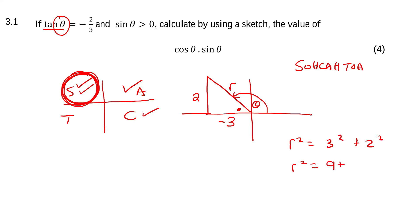That gives us 9 plus 4, which is 13. So r is the square root of 13. This value is always positive, no matter which quadrant you're in.